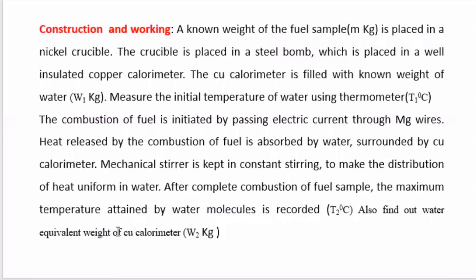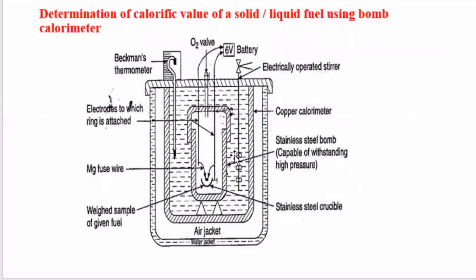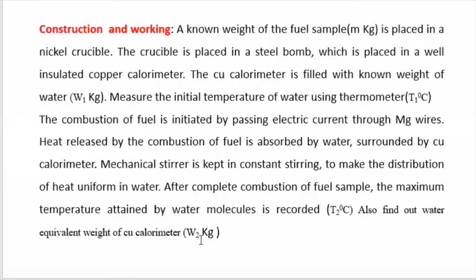We also find the water equivalent weight of the copper calorimeter. This represents the heat absorbed by the copper metal of the calorimeter, converted in terms of the equivalent heat absorbed by water molecules. This value is noted as W2 kg.